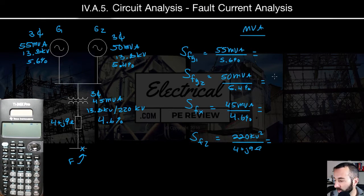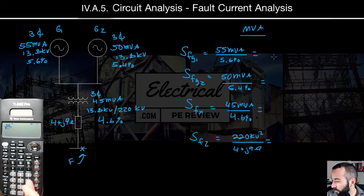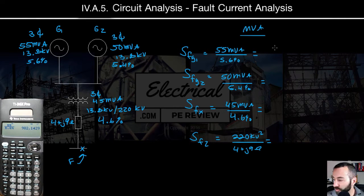All right, let's use our calculator. We have for the first one, SFG1, 55 MVA divided by 5.6%. It's a fault contribution of 982.14 MVA.